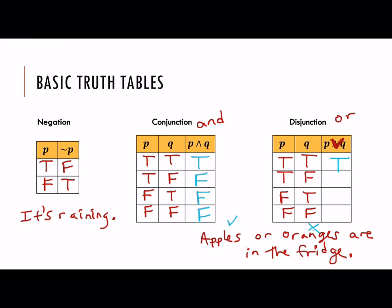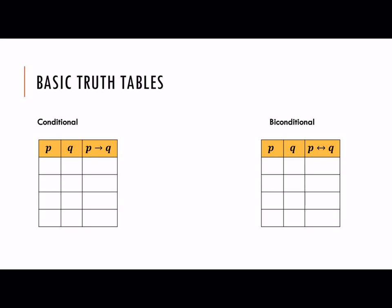If only apples are in the fridge, I only said one or the other had to be in there, so it's still true that apples or oranges are in there. And if there are no apples but there are oranges, and I say one or the other is in there, that's still a true statement. However, if neither is in there — both are false — and I say one or the other is, then that would be a lie, so that would be false. OR statements are true most of the time; the only case where this is false is if both things are false. In the next video, we will look at the next two basic truth tables: conditionals and biconditionals.